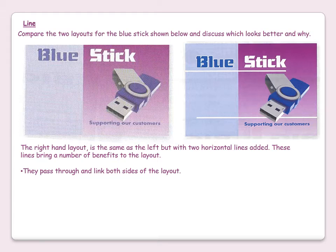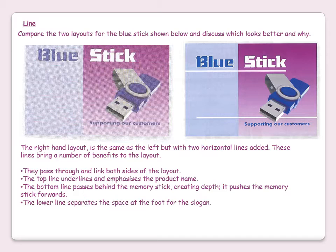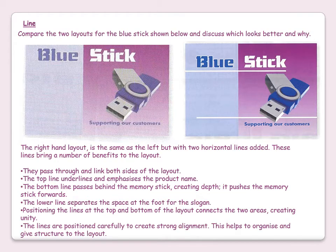The lines pass through and link both sides of the unit. The top line underlines and emphasises the product name. The bottom line passes behind the memory stick, creating depth — it pushes the memory stick forward. The lower line separates the space at the foot for the slogan. Positioning the lines at the top and bottom of the layout connects the two areas, creating unity. The lines are positioned carefully to create strong alignment, helping to organise and give structure to the layout. You can see how adding two simple lines can create a number of design principles.